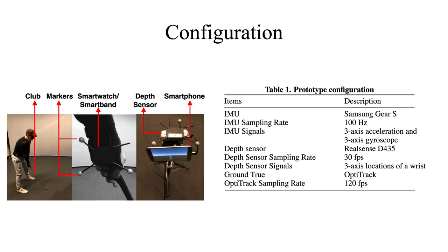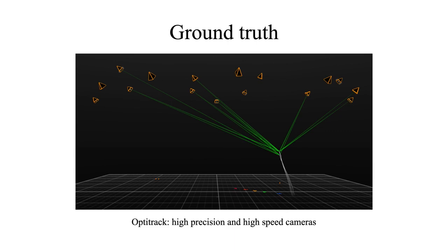In the configuration, we set the IMU sampling rate as 100 Hz. In IMU, we collect three axes of acceleration and three axes of gyroscope. We did not use the compass because many off-the-shelf smartwatches do not have a compass, for example, the Moto 360 and Samsung Gear S2. Another reason is it has a relatively very low sampling rate. We set the depth sensor sampling rate at 30 frames per second. Our ground truth is OptiTrack, which has a sampling rate of 120 frames per second.